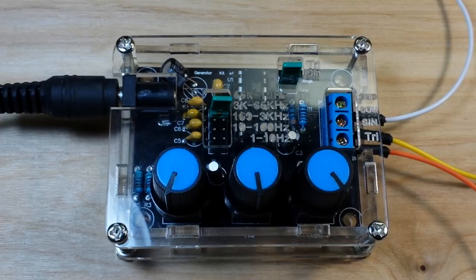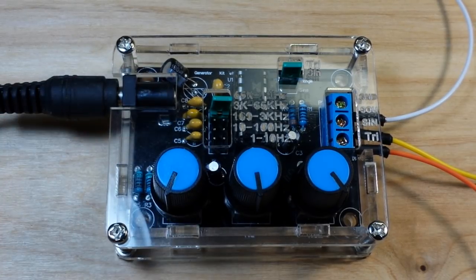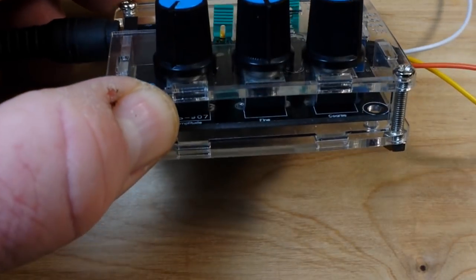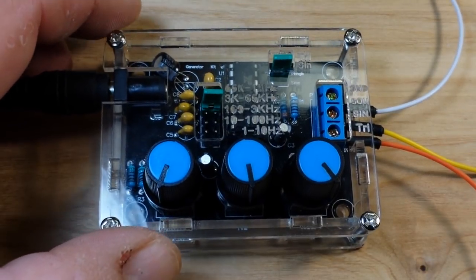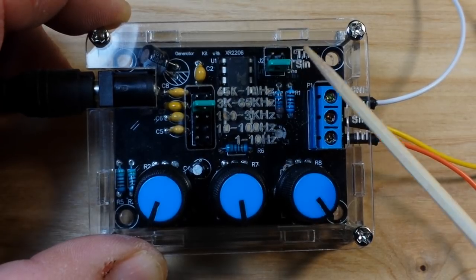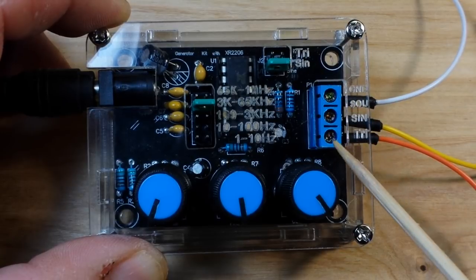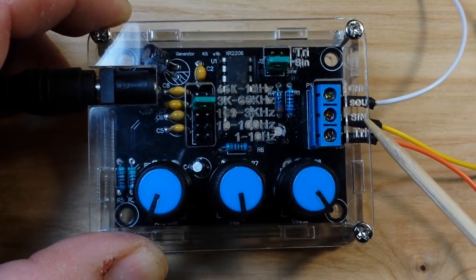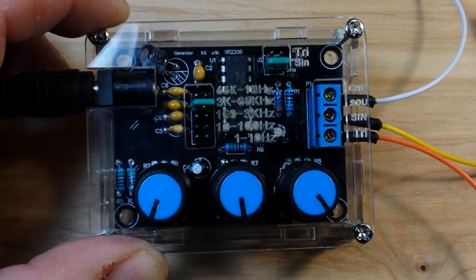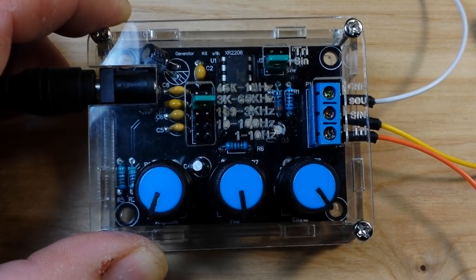Alright, I got the case together. I had to bend that little tiny electrolytic cap over there a bit so everything fit nicely. There's two jumpers: the first one selects between triangle wave and sine wave, and the second jumper selects a variety of ranges. We are on the 3K to 65 kilohertz range.